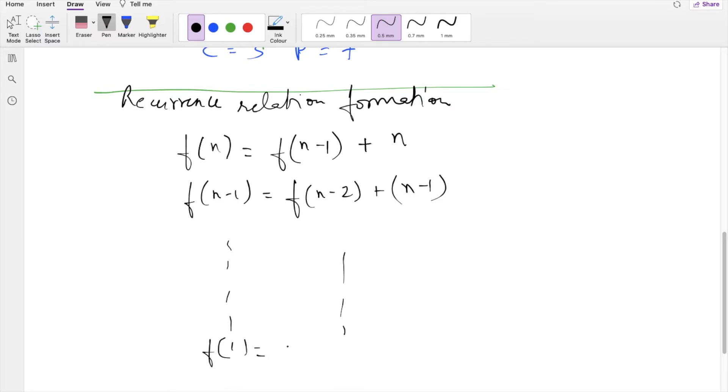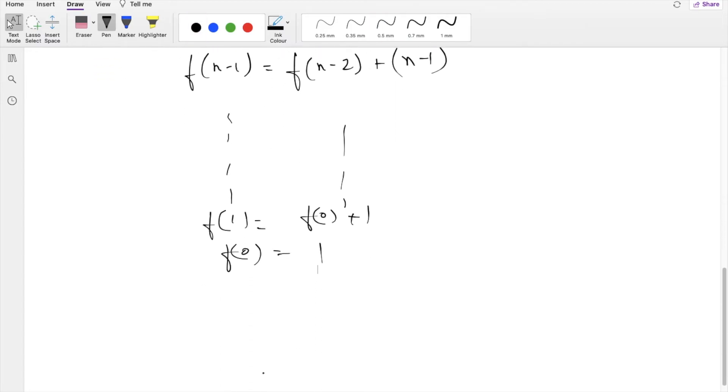And the base case goes like this: f(1) would be equal to f(0) + 1, and f(0) is 1. The number of cuts is zero, so we only have one cake piece. Now we will be adding all these terms.